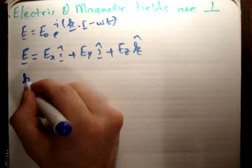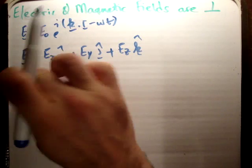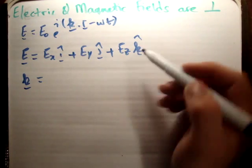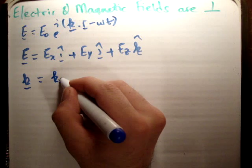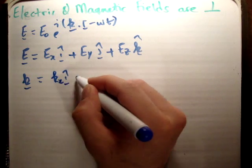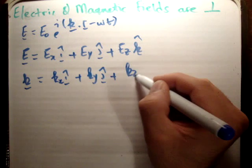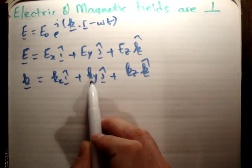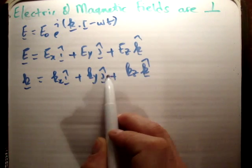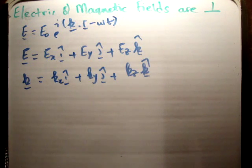If we apply similar logic to the k vector — not the k-hat vector, they are two different things — the wave number vector has components k_x in the i-hat direction, plus k_y in the j-hat direction, plus k_z in the k-hat direction.